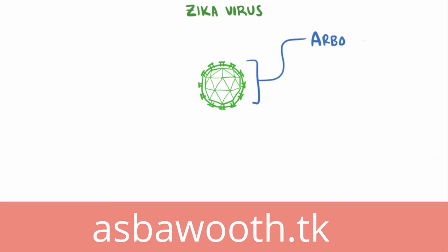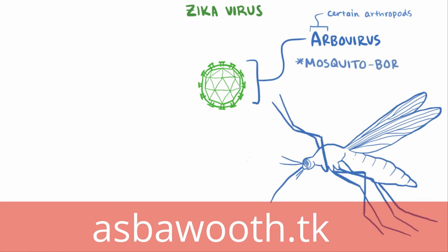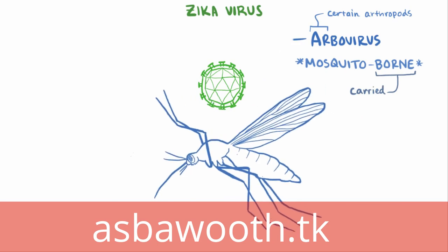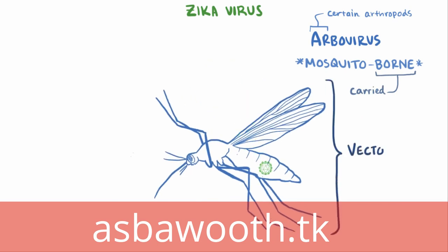Zika virus is an arbovirus, meaning it's transmitted via certain arthropods, specifically mosquitoes, so it's a mosquito-borne virus. Mosquito-borne doesn't mean that the virus is born in the mosquito — it's borne with an 'e', which means carried or transported. Sometimes we call organisms like this vectors, where all they do is transport the virus.